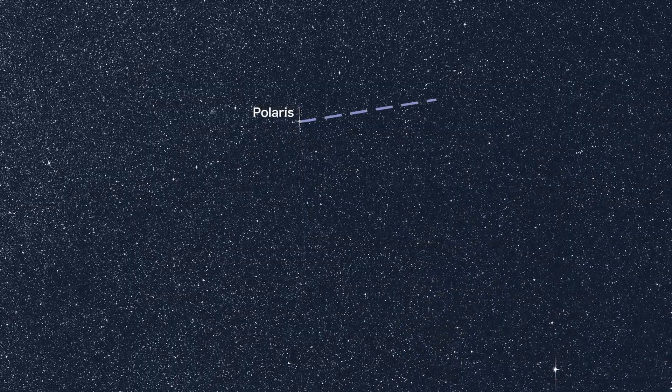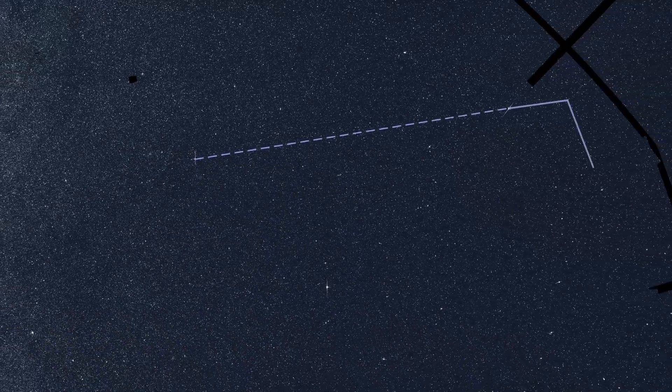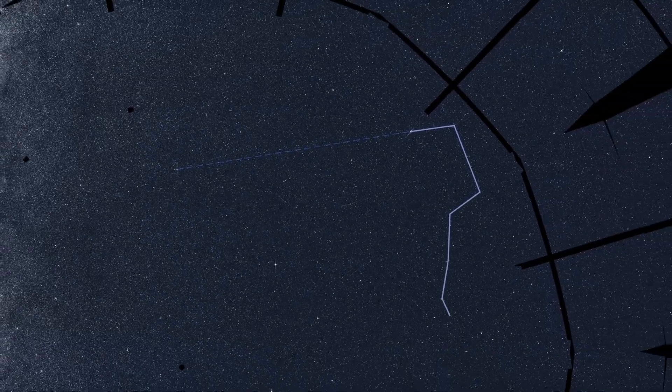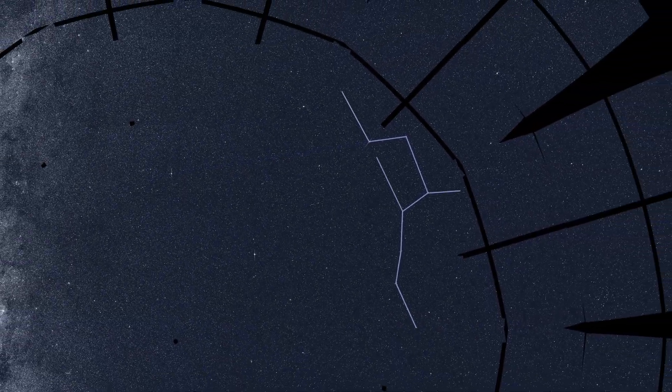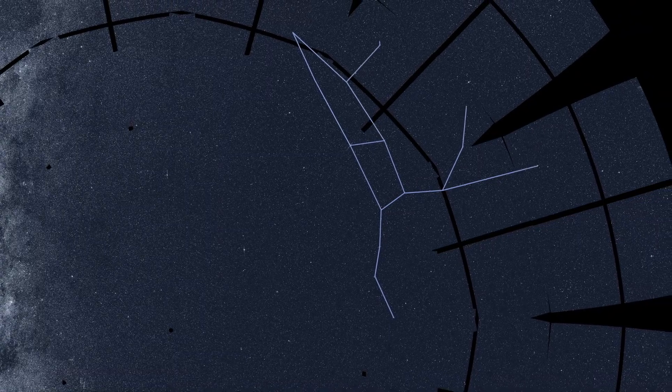To find Polaris, follow a line set up by these two stars in the cup of the Big Dipper. It's an easily recognized star pattern that forms the central part of the large constellation Ursa Major.